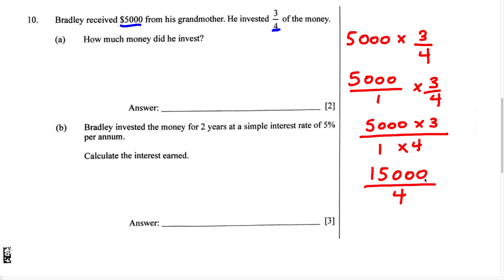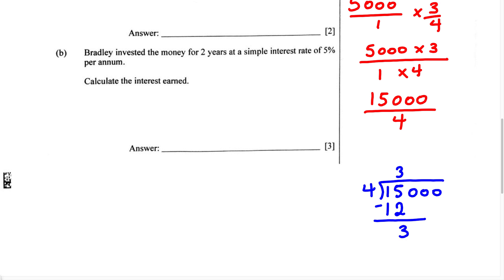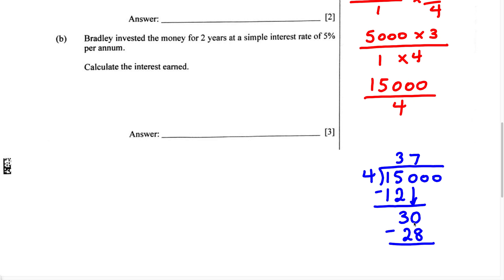Now we have 15,000 divided by four. Let's use long division. Four cannot go into one, but four can go into 15 three times. Four times three is 12. When we subtract this, 15 minus 12 gives us three.